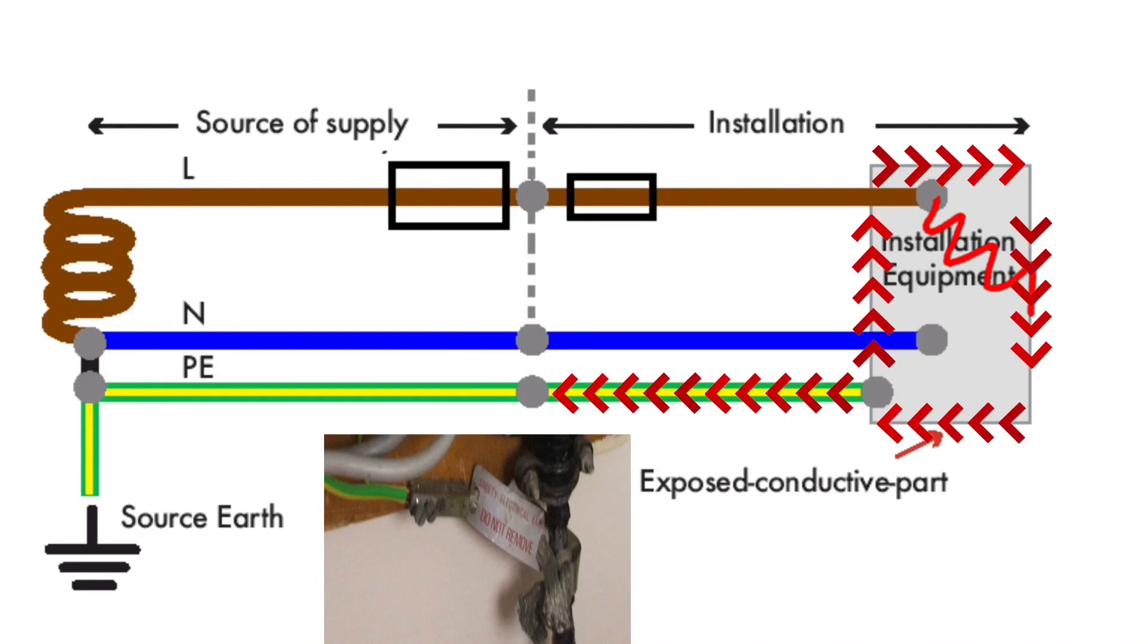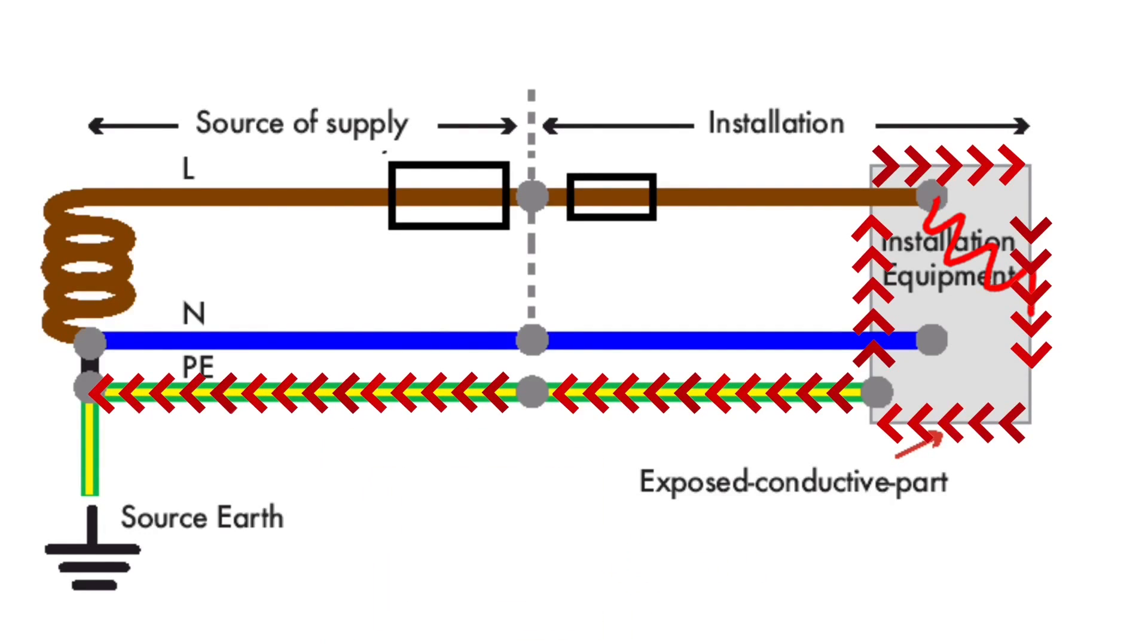The earthing conductor is connected to the lead or steel sheath of the supply authorities cable which becomes live. This is connected to the earth neutral point within the transformer which becomes live back round the line conductor completing the circuit.